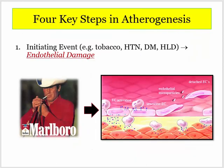Now let's walk through those four steps one more time. Step one is characterized by an inciting event or trigger. This is where your traditional cardiovascular risk factors come into play: smoking, diabetes, hypertension, and hyperlipidemia all lead to endothelial damage. This is key step number one — once the endothelium is damaged, the whole house of cards comes tumbling down.